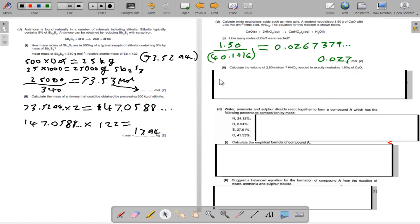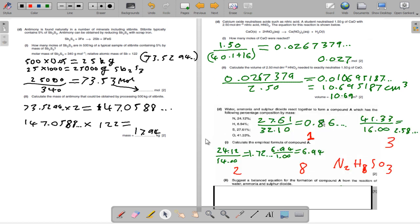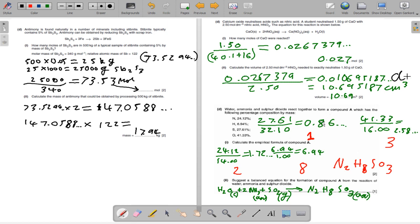For this question, deleting all the boxes, we get 1.5 over 40.1 plus 16, which is 0.0267 moles, or around it. Using the accurate calculator display, we get 10.69 centimeters cubed. As the concentration at the top is in decimeters cubed, times it up by 1,000, we get 10.69. So that's the volume in centimeters cubed. And this is the volume in decimeters cubed.